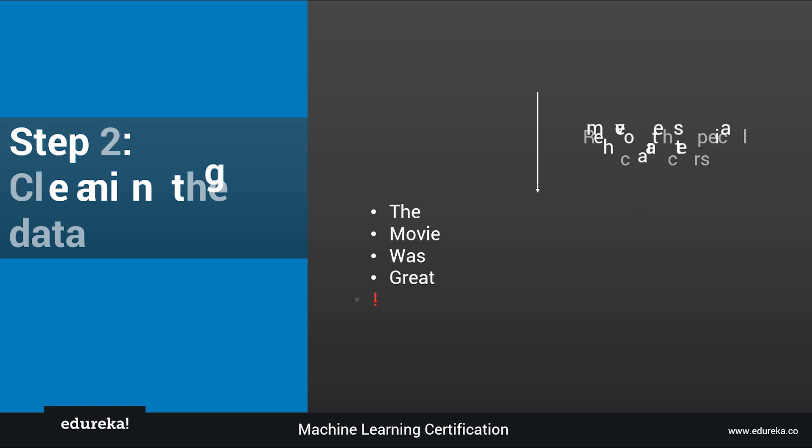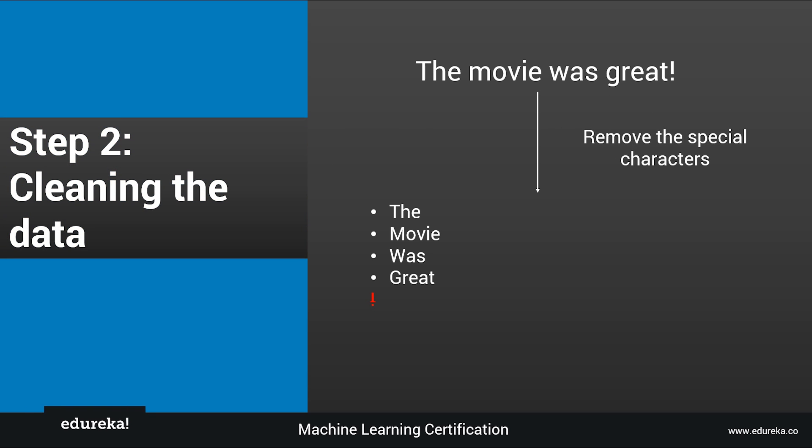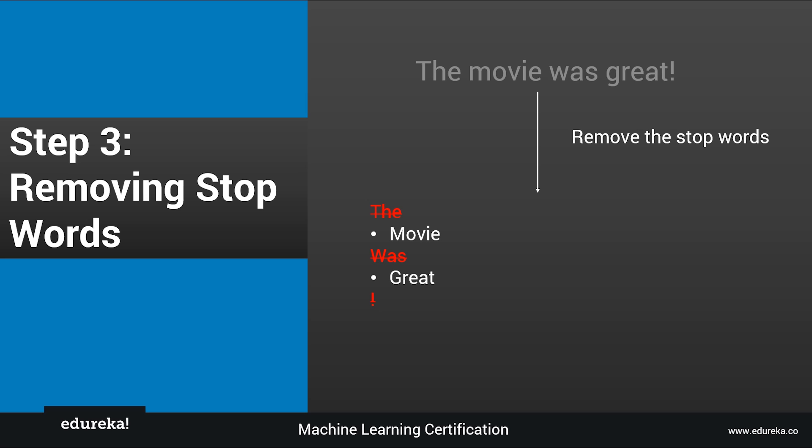Once tokenization is done, the second step is cleaning the data — removing all special characters or any words that do not add value to the analytics. For example, I'd be removing the exclamation mark, so I'm left with four words: the, movie, was, and great. The next step is removing stop words. Words like 'the', 'was', 'is', 'he', 'she' do not add much value to the analytics, so we can easily remove them. Now we are left with just two words: movie and great.